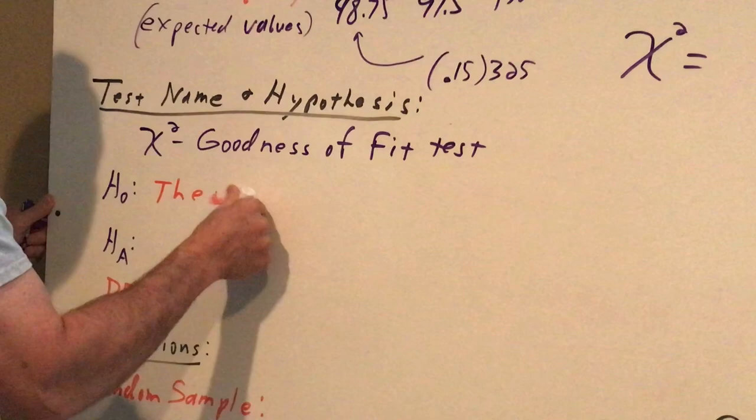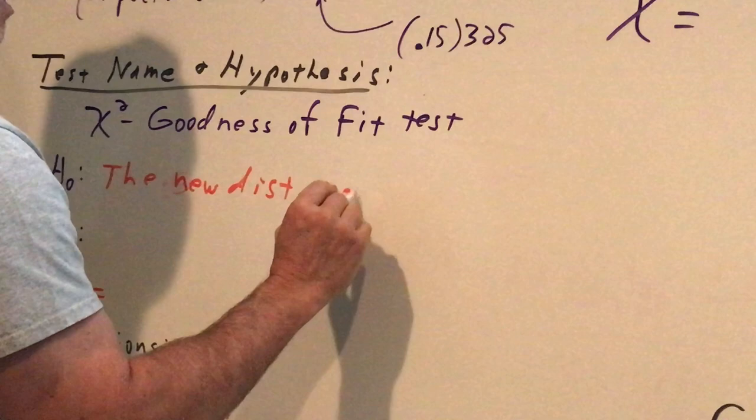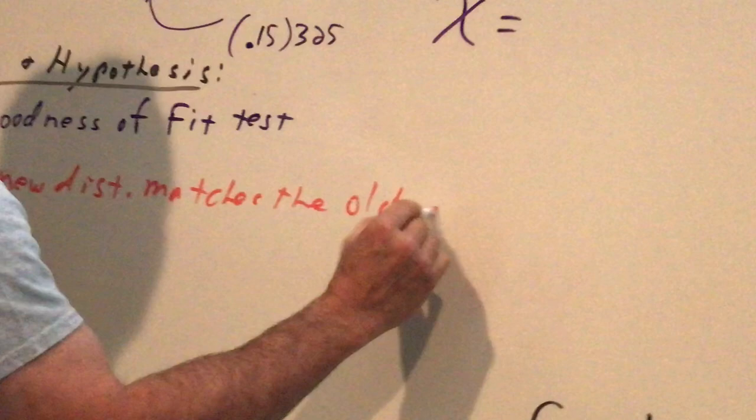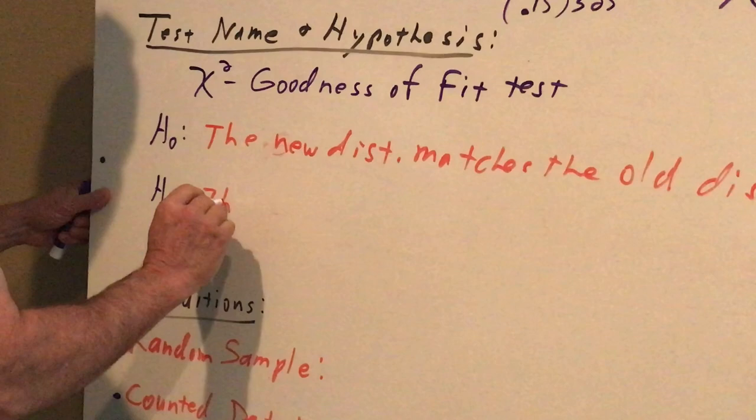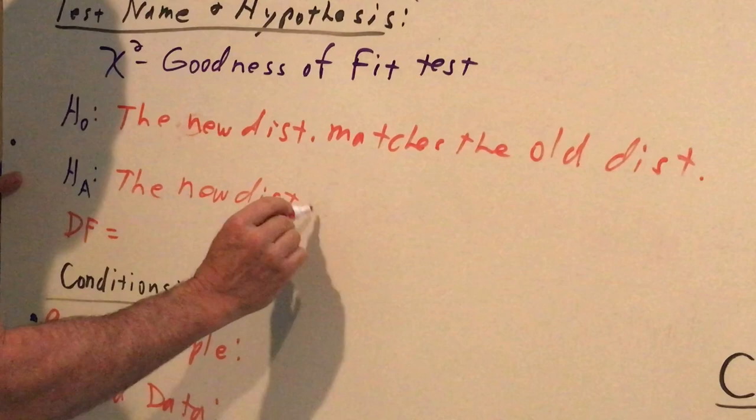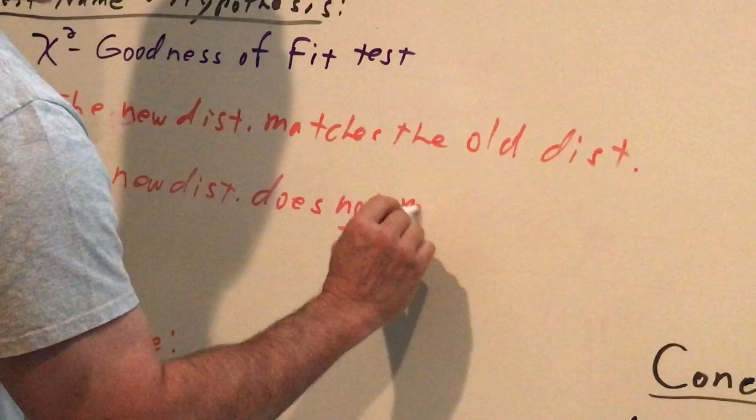The new distribution matches the old distribution. The alternative, of course, the new distribution does not match the old distribution.